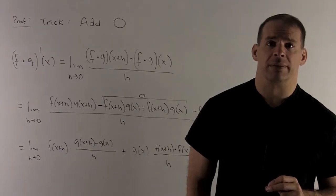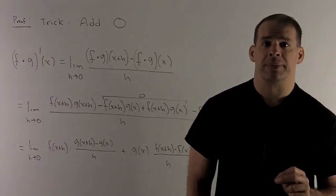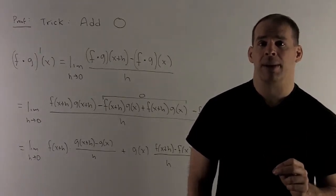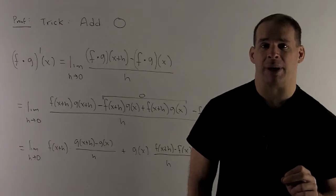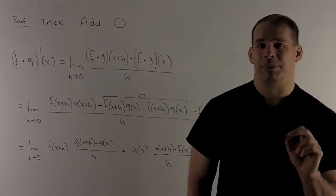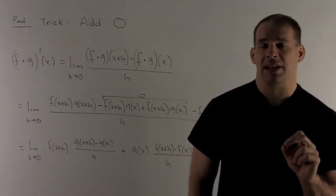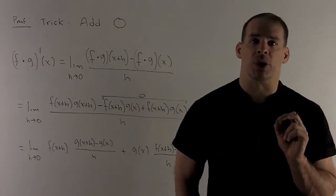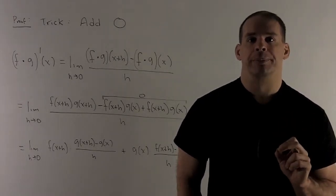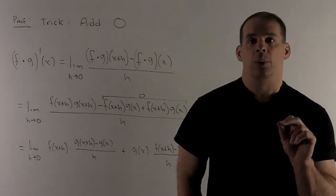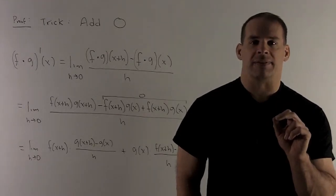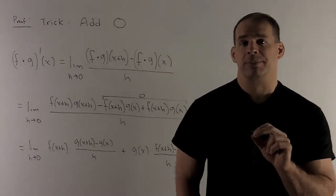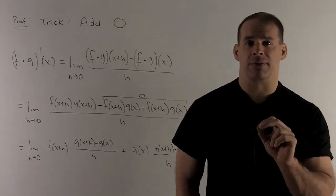We start by just following our nose with the limit definition of the derivative. I take the derivative of f times g: that's going to be the limit as h goes to 0 of [f(x+h)g(x+h) - f(x)g(x)]/h. Looking at that, there's nothing we can directly do to get us to our answer, so we're going to have to introduce some terms in the numerator to let us get some work done. With a little bit of foresight, you might see that if I add in or subtract f(x+h)g(x), if I subtract that off the first term then I have to add it in on the second term, so that way I'm just adding zero.